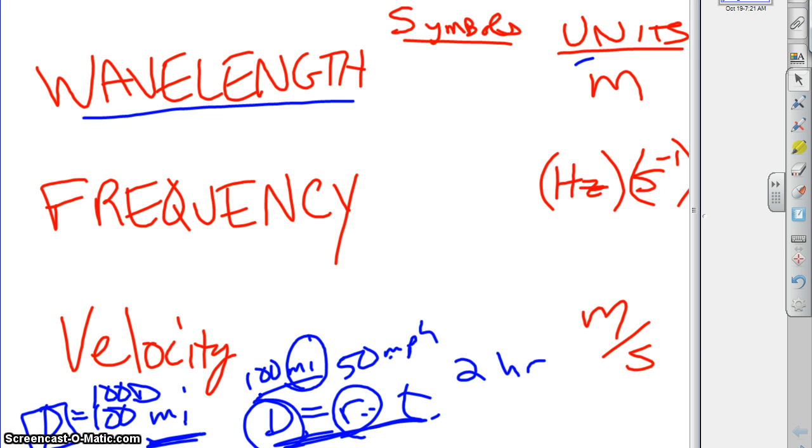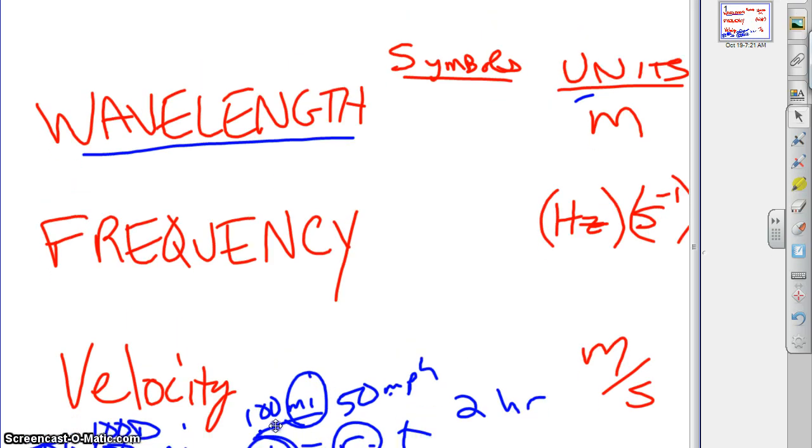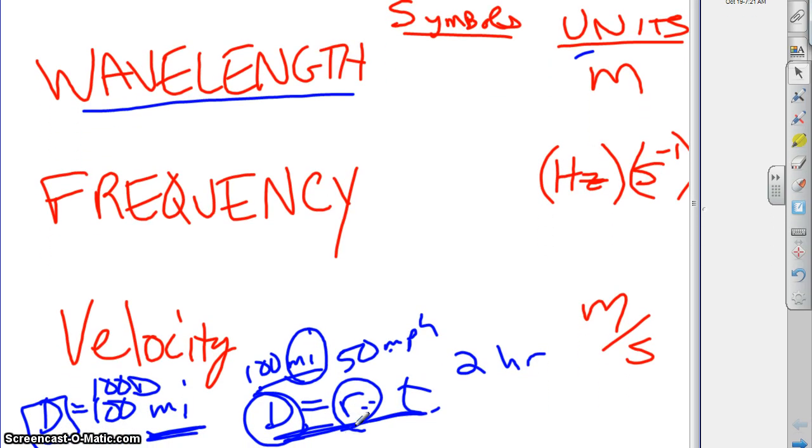But as we get into some formulas and things, we'll want ways to describe it just like we did down here. We'll need ways to describe these different, the velocity, the frequency, wavelength, as we would do formulas. We need symbols for them as well.